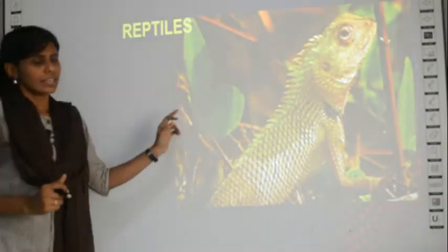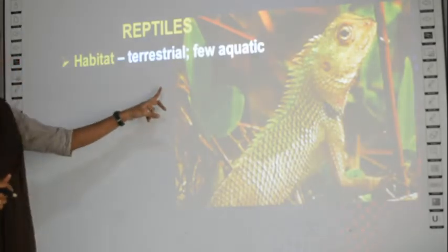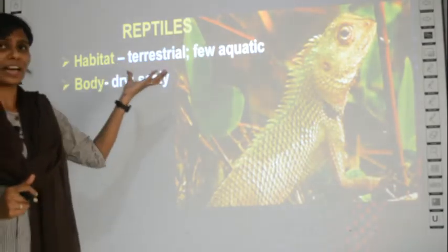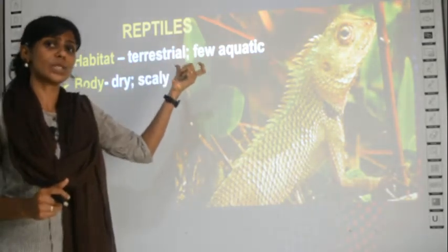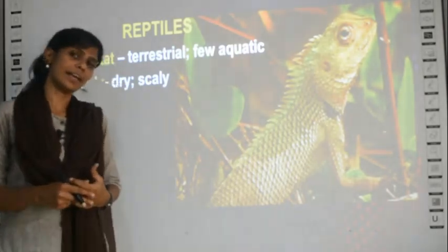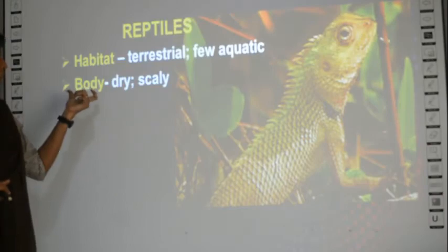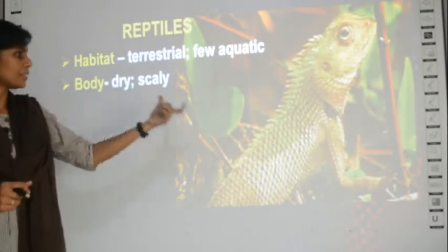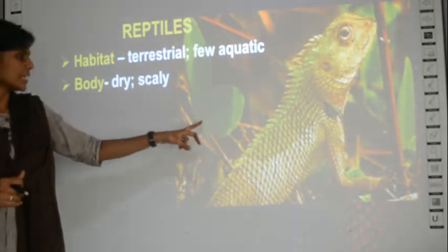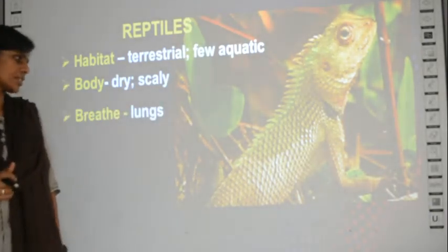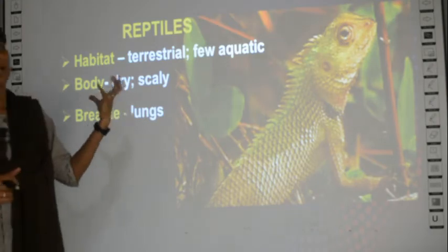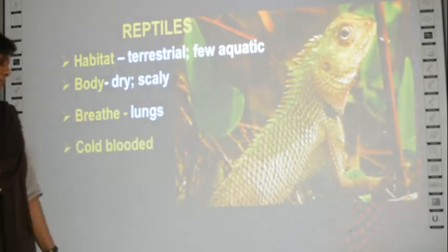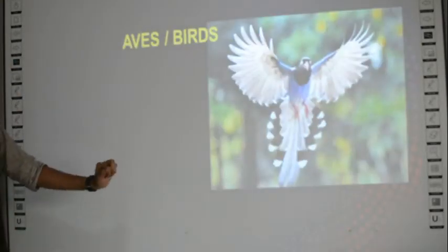The next group is reptiles. They also have the ability to live both on land and in water - they are terrestrial as well as aquatic. Their body is dry and scaly, unlike amphibians whose body is moist. They breathe with the help of lungs, just like human beings. Reptiles are also cold-blooded animals.